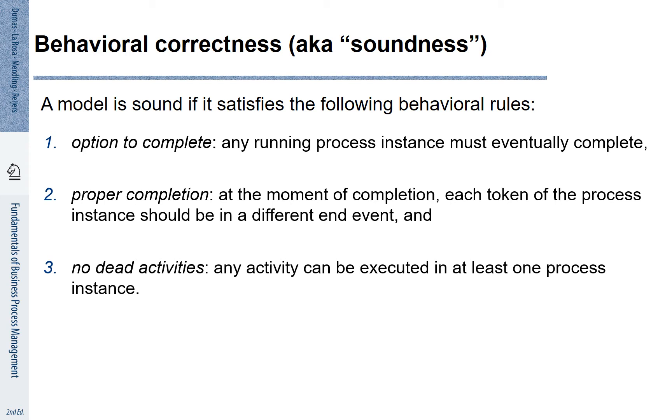First, there must be an option to complete. That means any case that is processed must have the chance to reach one of the output events. The second property says we need to have proper completion. This means when we reach the end event, it should not be the case that anything can still be done in the process. And there should not be any dead activities. That means all activities that we represent should be potentially able to be executed. These are technical requirements that can be checked with automatic formal tools for process verification.